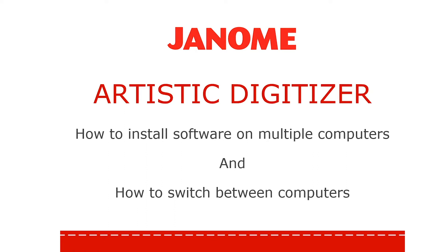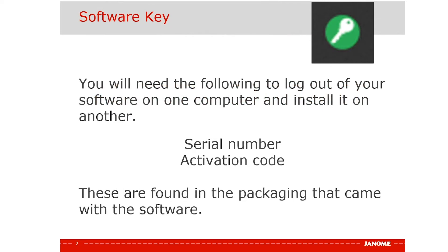This video will help you to install your software on multiple computers and how to switch between computers. You will need the following to log out of your software on one computer and install it on another: your serial number and your activation code. These are found in the packaging that came with the software.